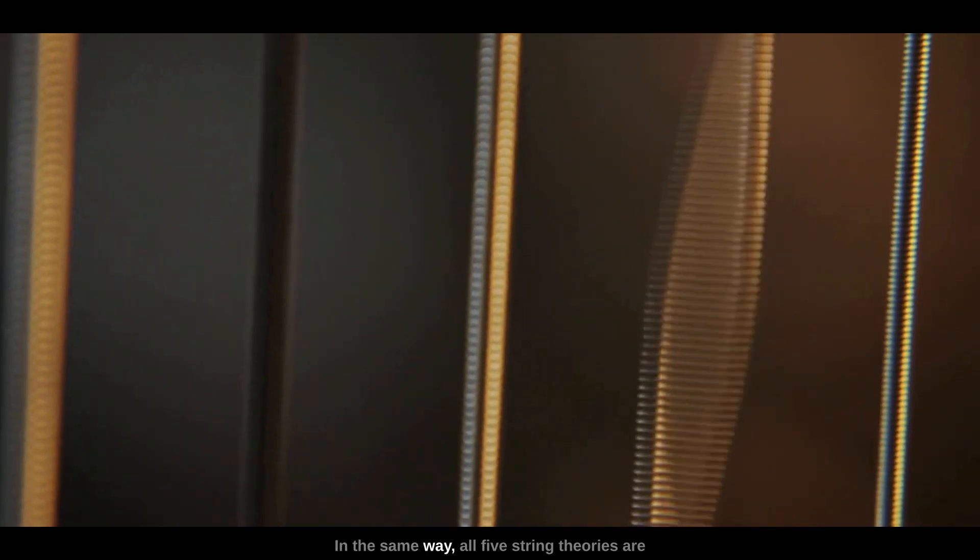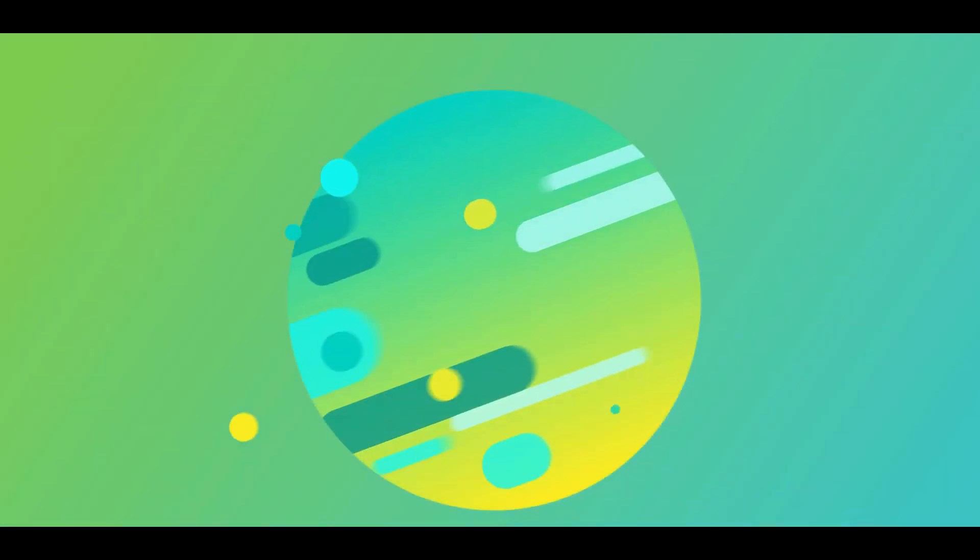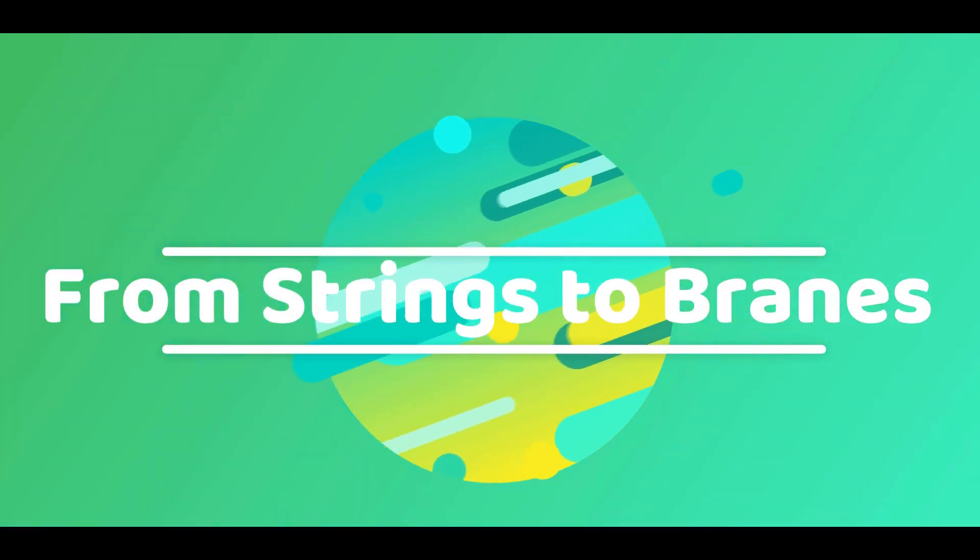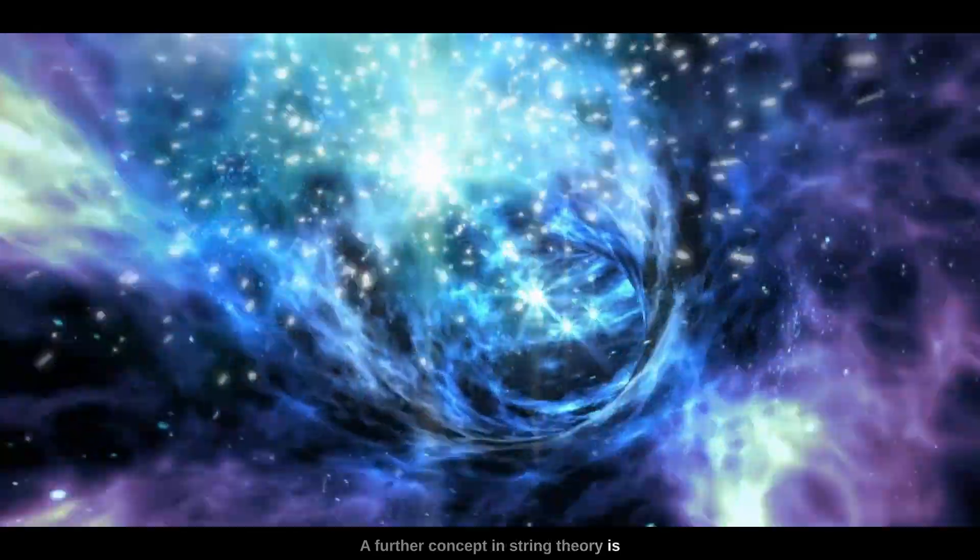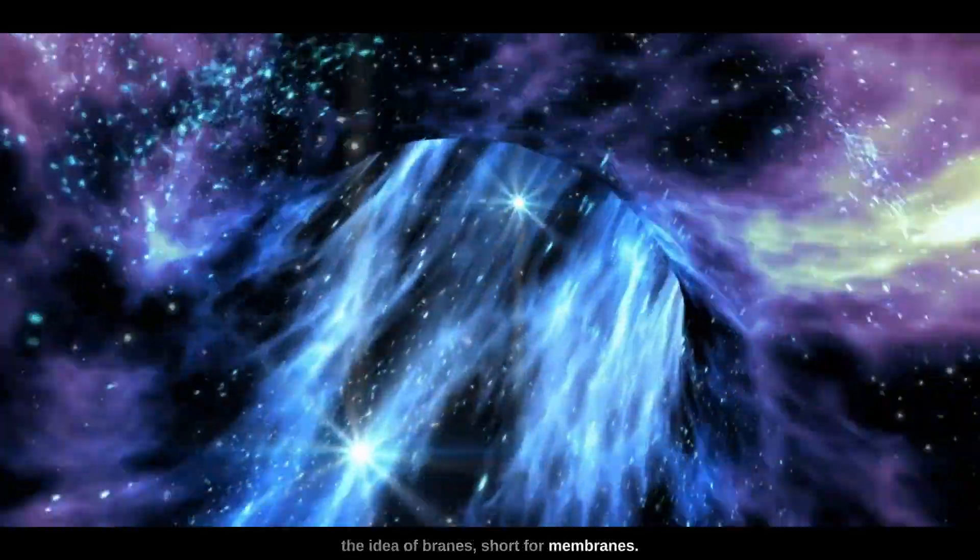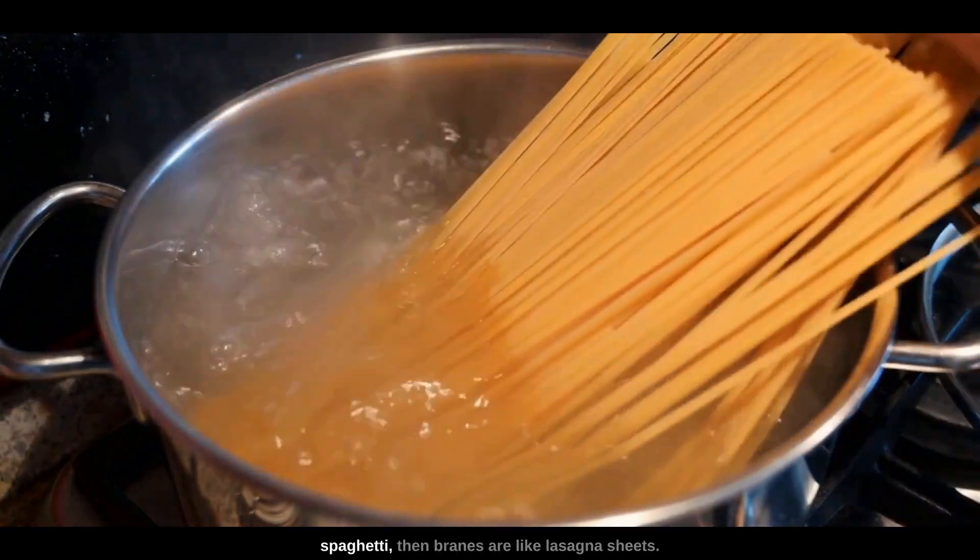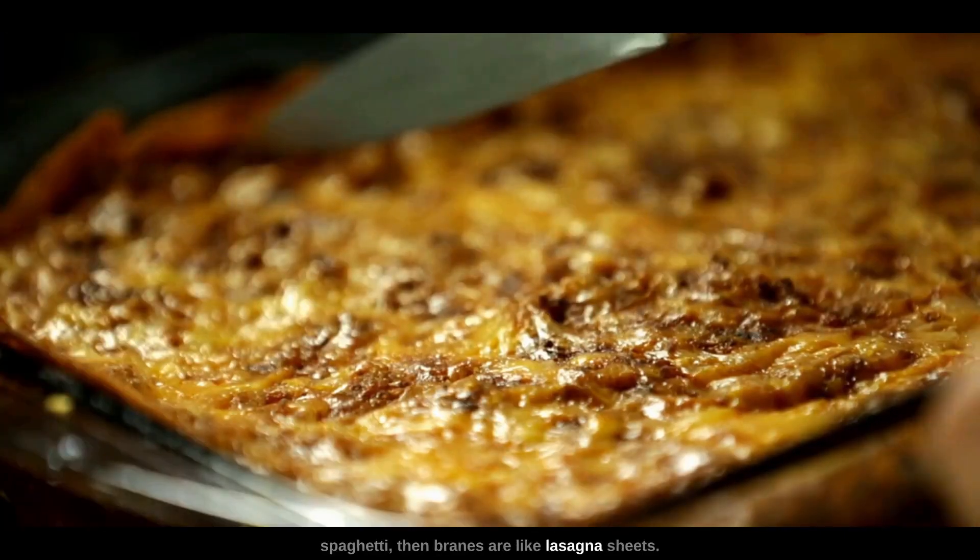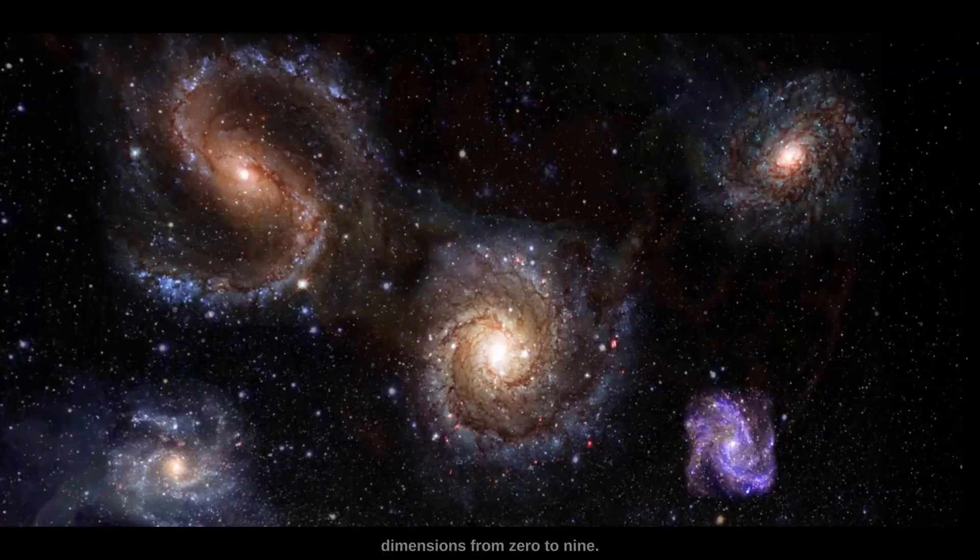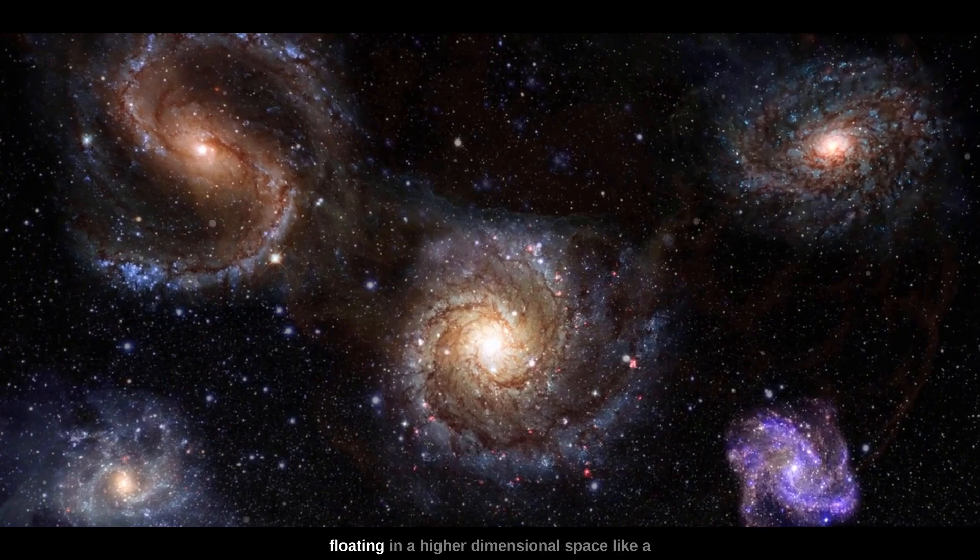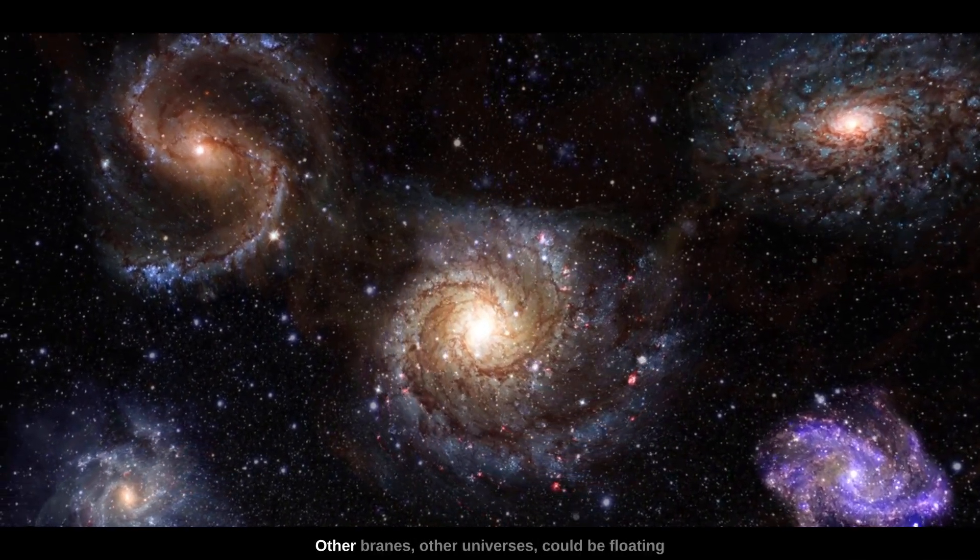A further concept in string theory is the idea of branes, short for membranes. If strings are like tiny one-dimensional pieces of spaghetti, then branes are like lasagna sheets. They can have any number of dimensions from zero to nine. Imagine our entire observable universe is a brane floating in a higher-dimensional space, like a sheet of paper in the air. Other branes, other universes, could be floating around in this space as well.